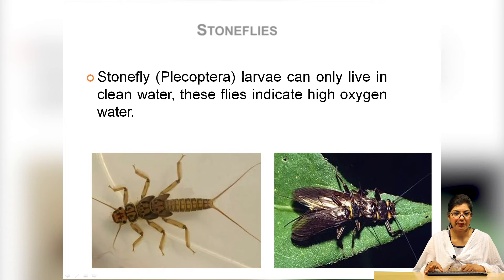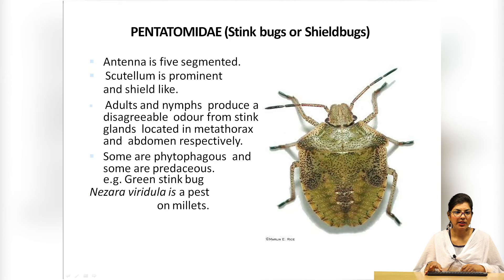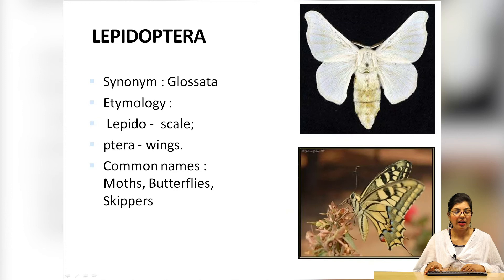In Hemiptera we have bugs. Different families of bugs also act as bioindicators to determine the quality of water. These include giant water bugs, stink bugs or shield bugs which belong to the family Pentatomidae — all of these act as bioindicators.